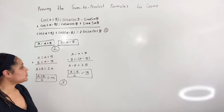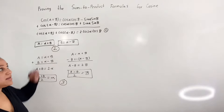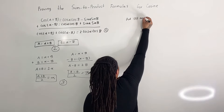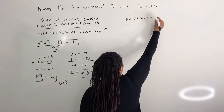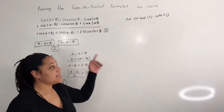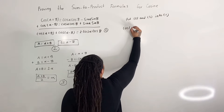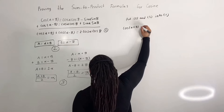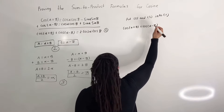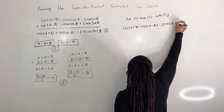Next, we're going to put equations 2 and 3 into equation 1. So I'm going to rewrite equation 1: we have cosine of alpha plus beta plus cosine of alpha minus beta is equal to 2 cosine of alpha cosine of beta.